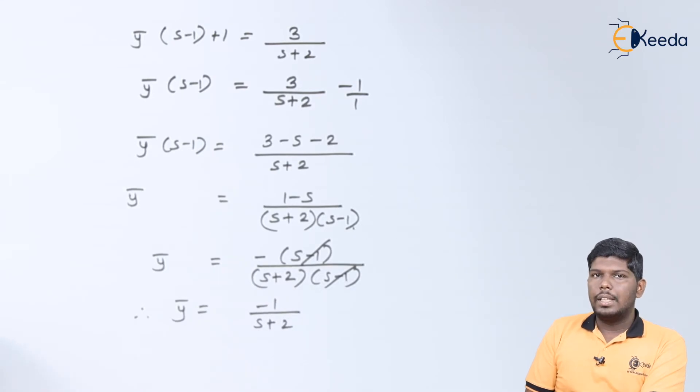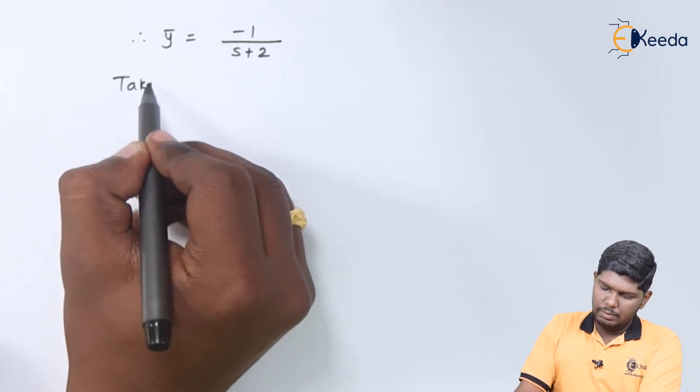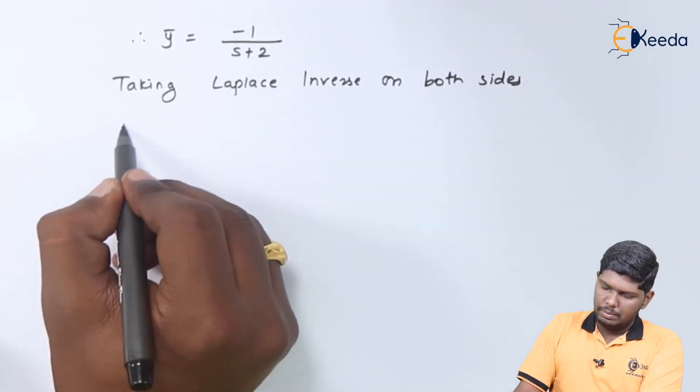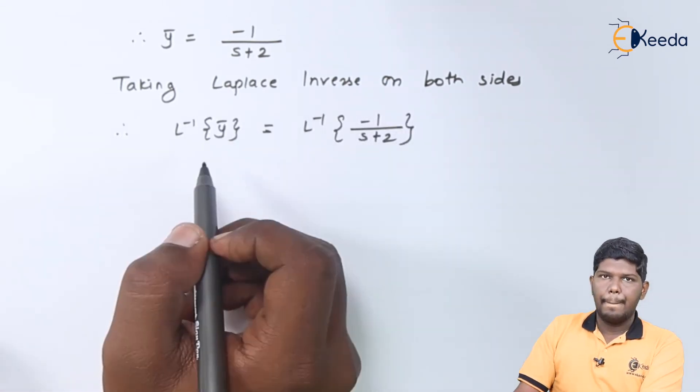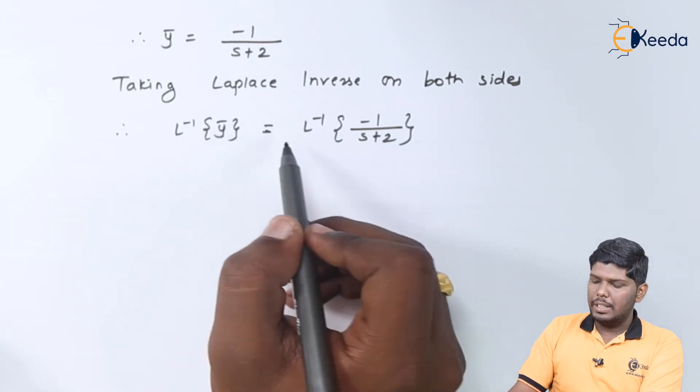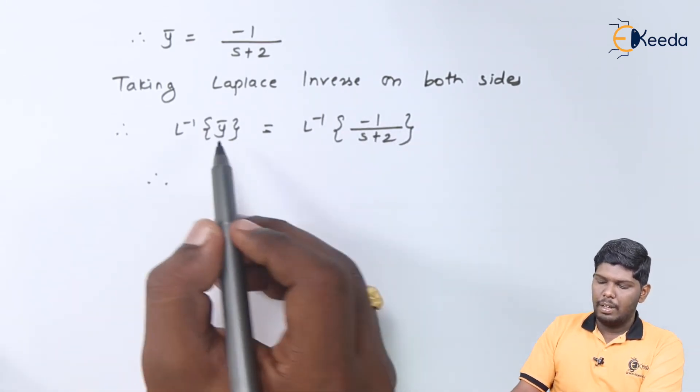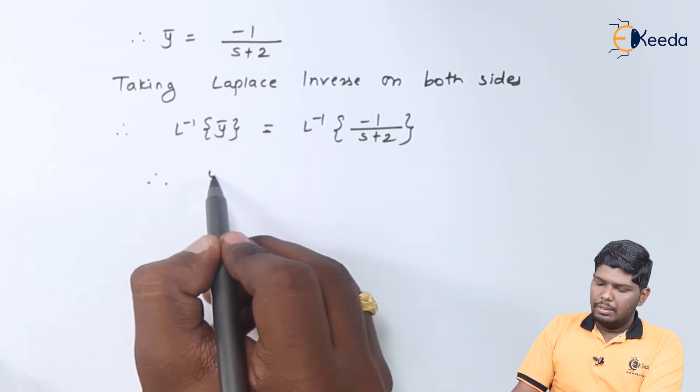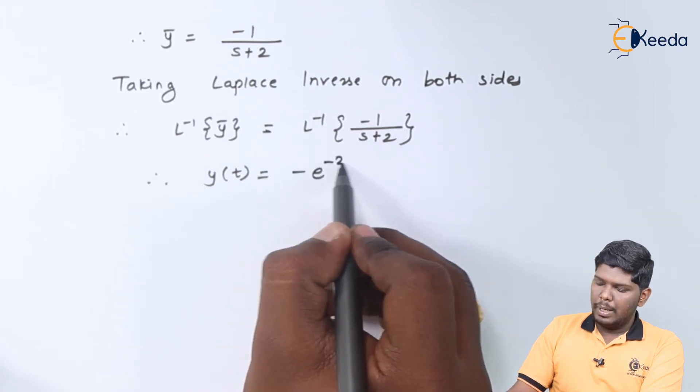Now the next procedure will be taking Laplace inverse on both the sides. So we have Laplace inverse of y bar is equal to Laplace inverse of minus 1 upon s plus 2. Again, Laplace inverse of y bar will give you y of t, and on the right hand side we have minus e raised to minus 2t.